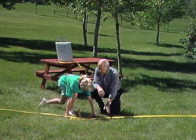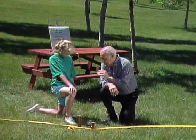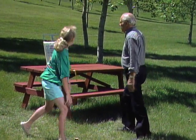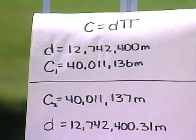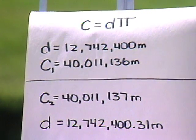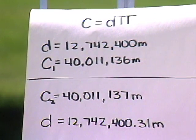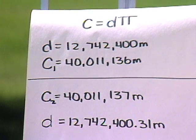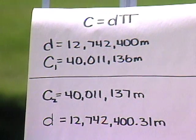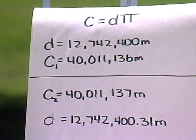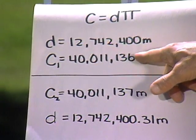Now we theoretically have put this tape around the entire circumference of the earth. I have calculated for you some various things. Do you know what this stands for? Circumference equals diameter times pi. And here's the diameter of the earth in meters: 12,742,400 meters. Therefore the circumference is 40,011,136 meters. This 136 — very important, keep that in mind.